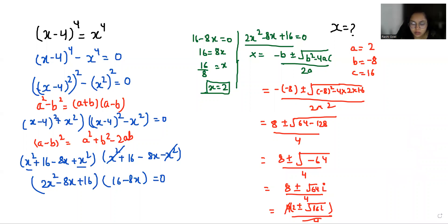If I take 2 as common, the value of x is 2 ± 2 iota.